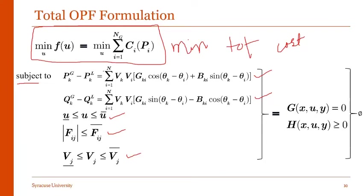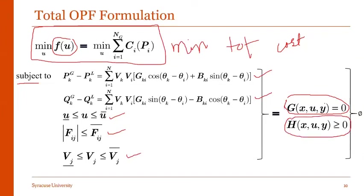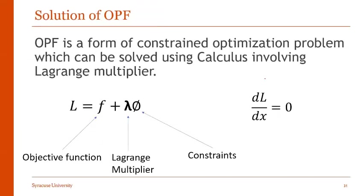In general notation, we assign the cost function — the summation over all generators — as f(u), which is our objective function for decision variables u. The set of all equality constraints is denoted g(x, y, u), and the inequality constraints are denoted h(x, y, u). The set of all constraints g and h together are denoted as phi, and our objective function is similarly denoted using phi.